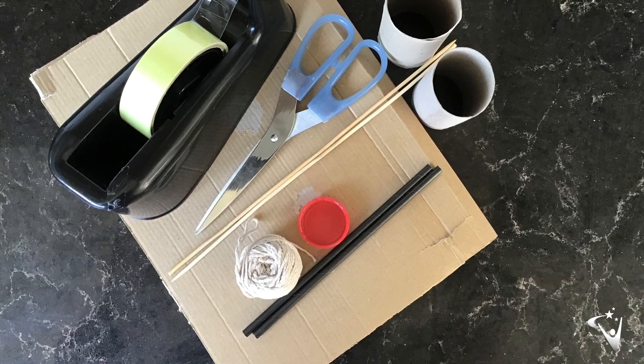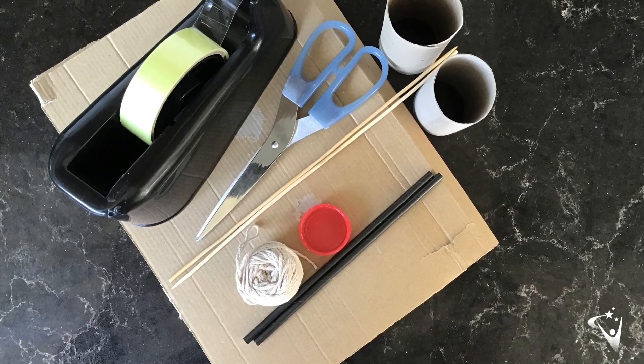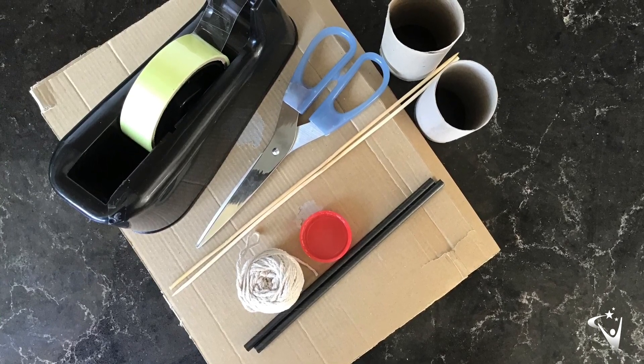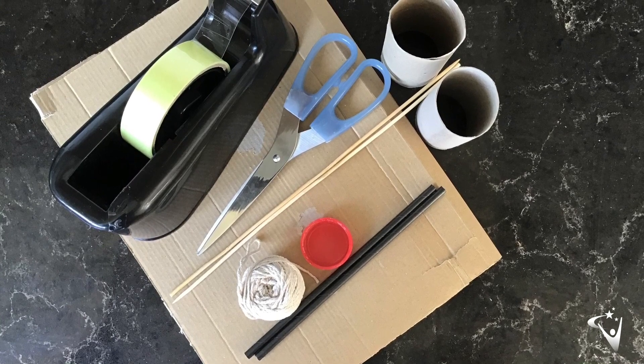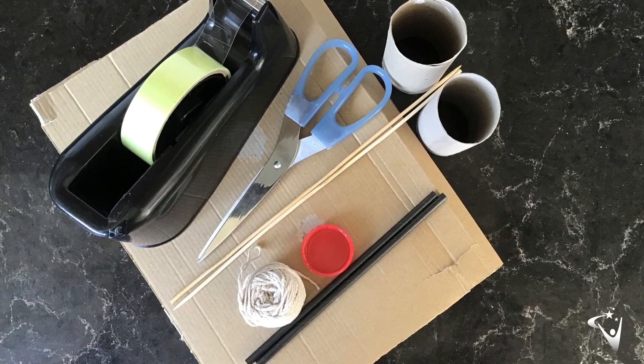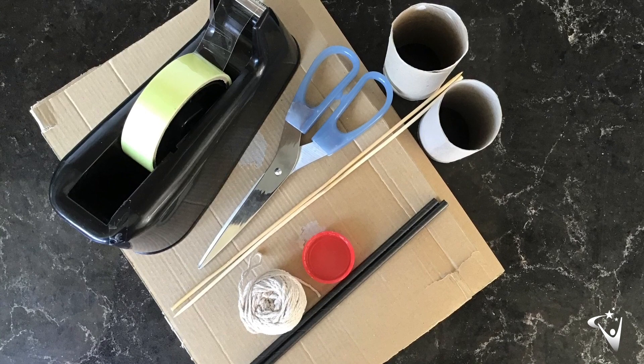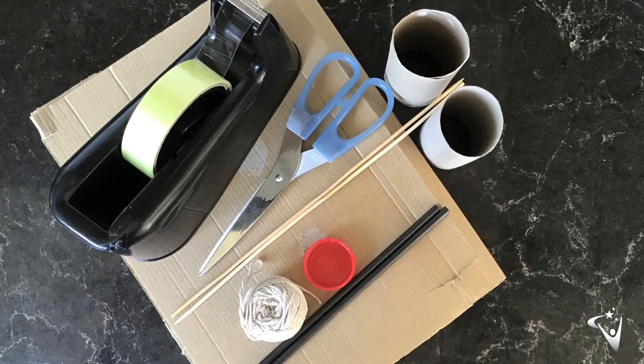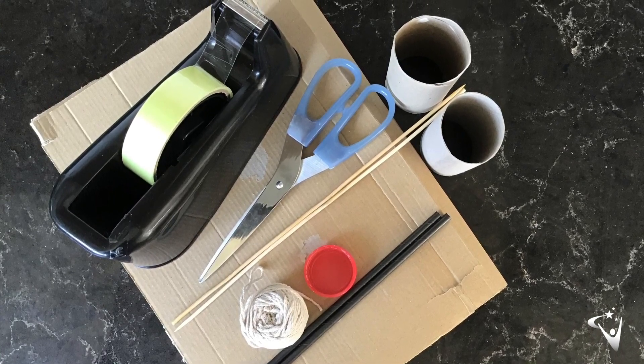The materials we're going to need this week are some cardboard, some cardboard tubes, some wooden skewers, some drinking straws. I've used milk bottle tops for my wheels, some string, a fridge magnet, and anything you can use to make the body of your robot. I've used egg boxes, also tape and scissors.